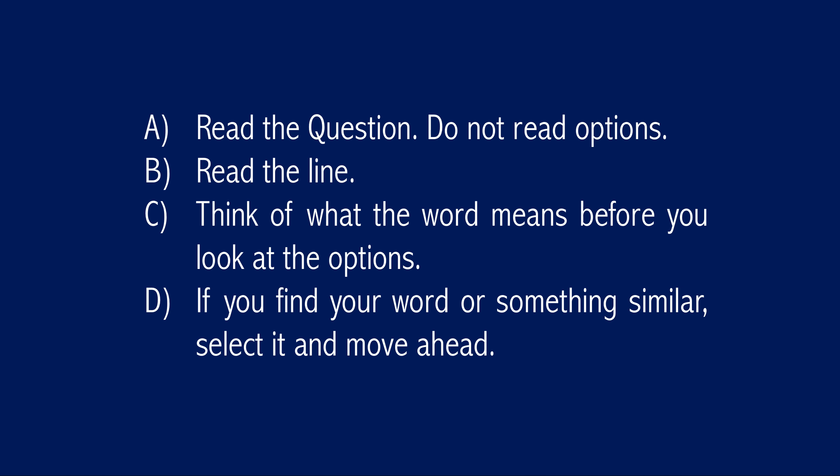This is relatively simple to solve. You just need to read the question and avoid reading the options before you read the context. Although it's not imperative, I strongly advise it — because words have multiple meanings, and if you think the word should mean one of the options, you may try to force-fit that option into the context even though it may not be the best fit. To eliminate the possibility of bias, it's better to read the passage before the options. Then read the context, think of what the word means, and if you find your word among the options, select it and move ahead.